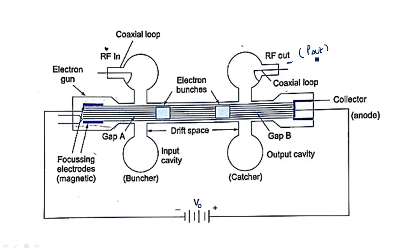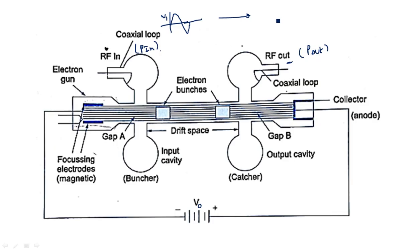We need to calculate the amount of output power P_out. This is the amount of power we are giving as P_in. If any sinusoidal signal with a certain amplitude V1 is applied, after passing through this klystron amplifier, the signal will be greatly amplified because it is a high-power amplifier. We are going to derive the expression for the output power in this video.